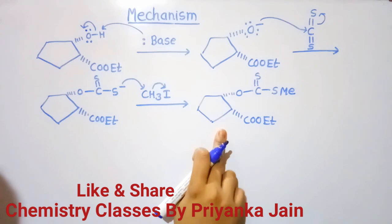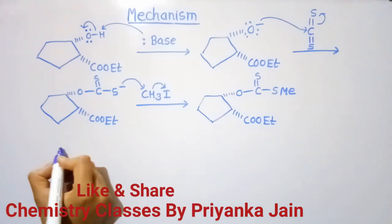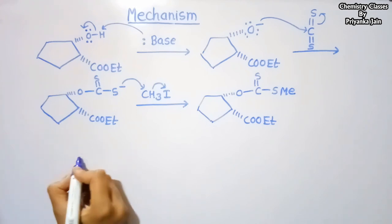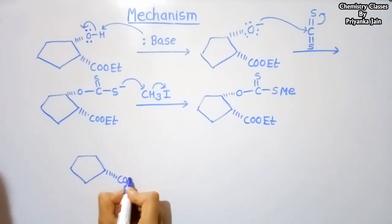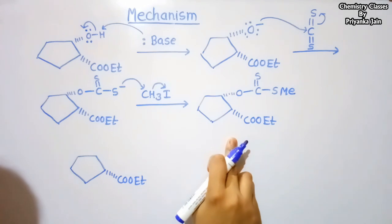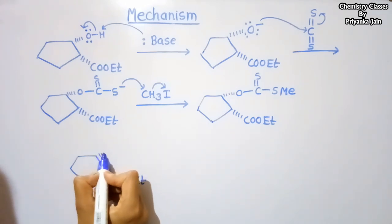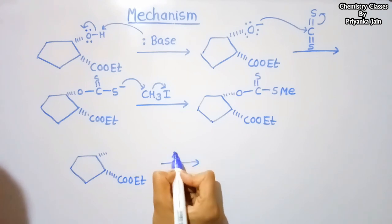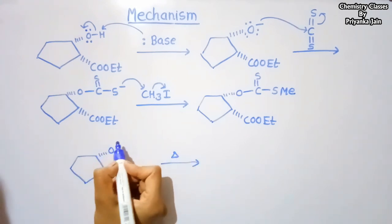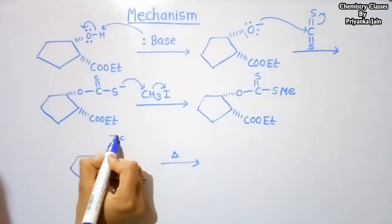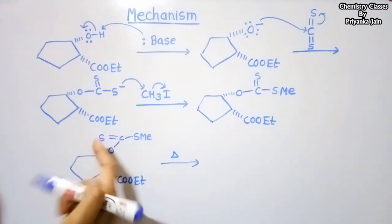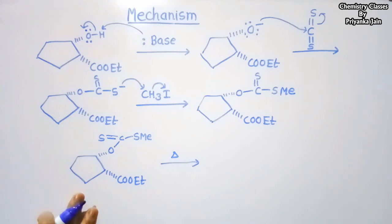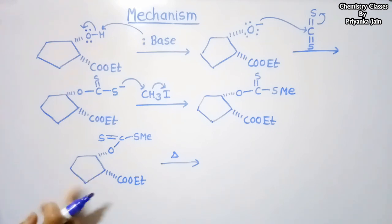The next step is the pyrolysis of this xanthate compound. When we are heating this compound, it will undergo the pyrolysis reaction. Pyrolysis is a concerted reaction; it takes place through a six-membered cyclic transition state.